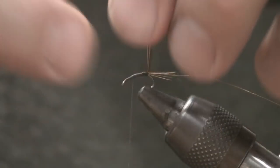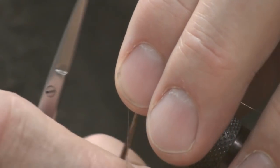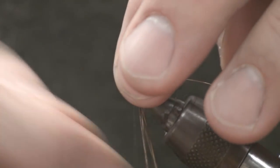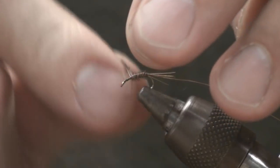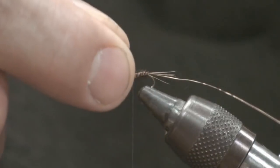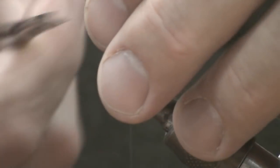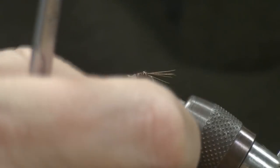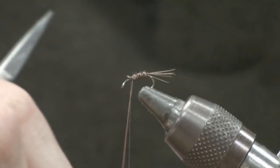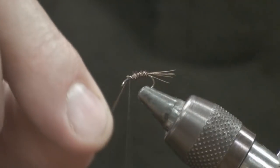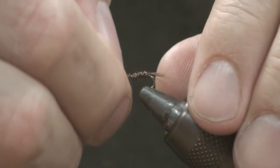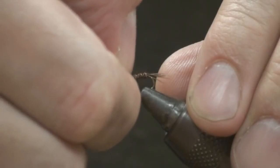Then I take my pheasant tail and I'll build my body. Just wrap that forward. Tie it off. I'll take my copper wire and I'll counter wrap that just for some added flash as well as some durability to the pheasant tail. Try and space those as even as you can. I got about three turns there. Trim off my copper wire and I just like to take my thumbnail and push that wire down so it's not going to cut my thread.